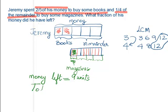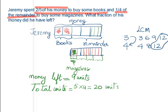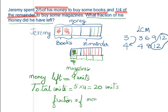What are the total units? The original bar had 5 parts, and each has been divided into 4 sub-units, so 5 times 4 equals 20 total units. The question asks what fraction of his money did he have left. The fraction of money left equals 9 units out of 20 units — so the answer is 9/20.